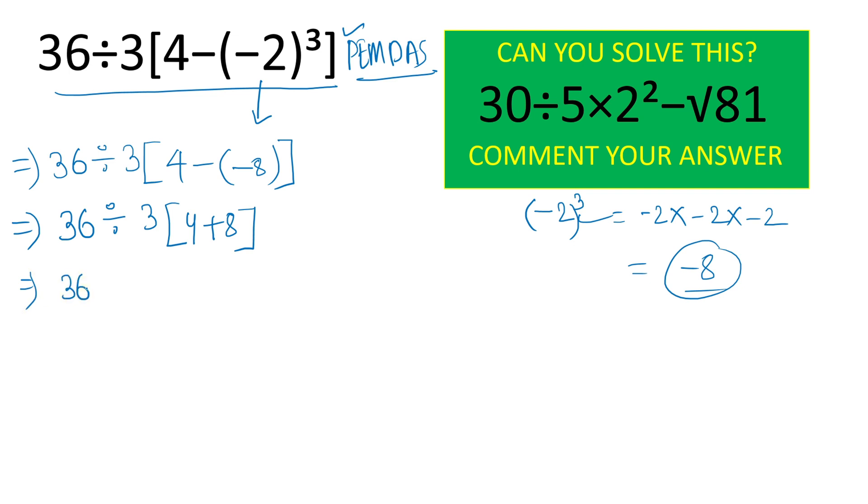Similarly, 36 divided by 3, 4 plus 8 will give result 12 here. So we will write times 12.